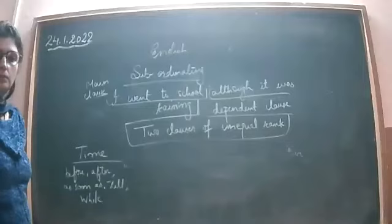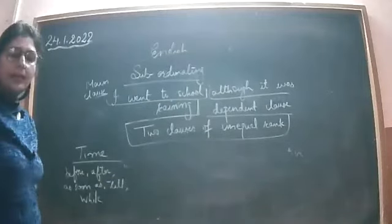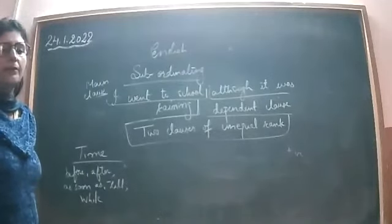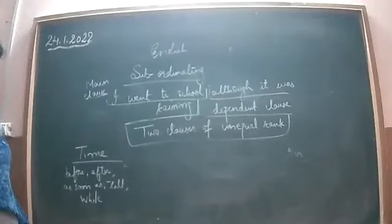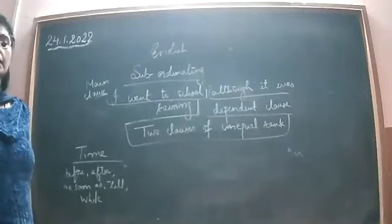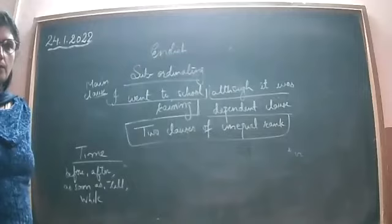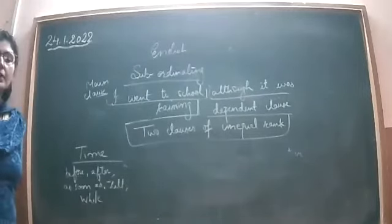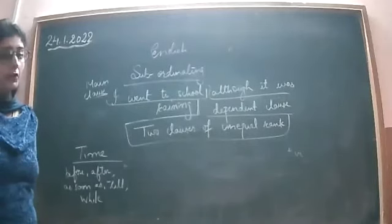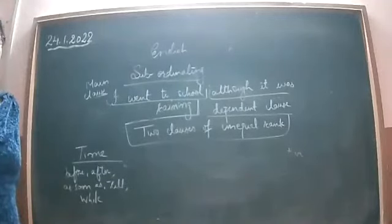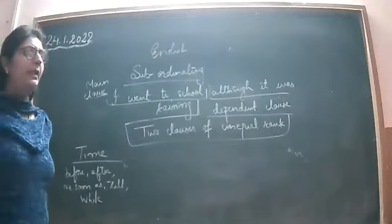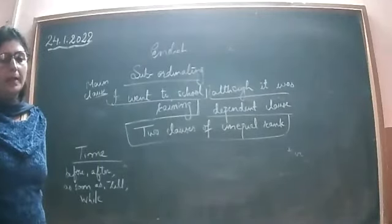For 'as soon as': 'As soon as I saw the snake, I ran out of the room.' For 'till': 'I will not take your side till I know the truth' — meaning until I find out the reality. For 'while': 'He was writing his homework while his brother was playing a video game.' These are examples of subordinating conjunctions of time.